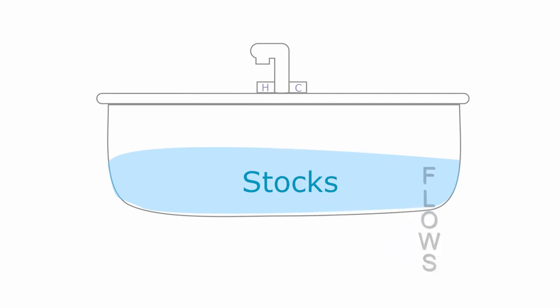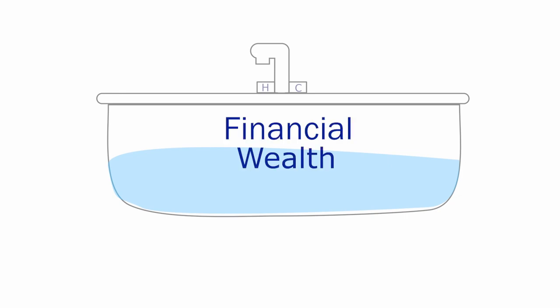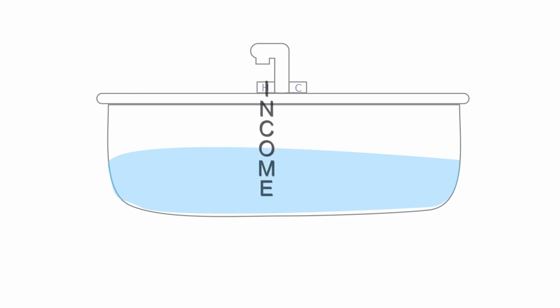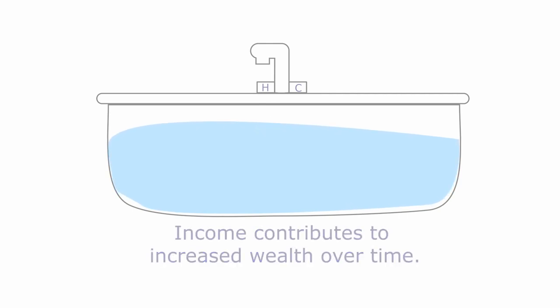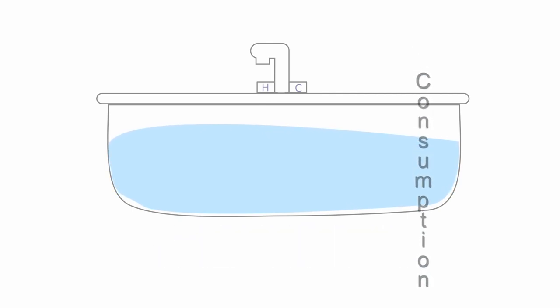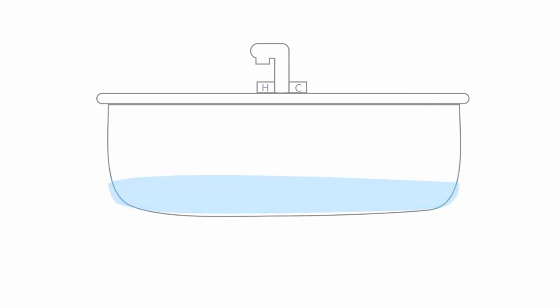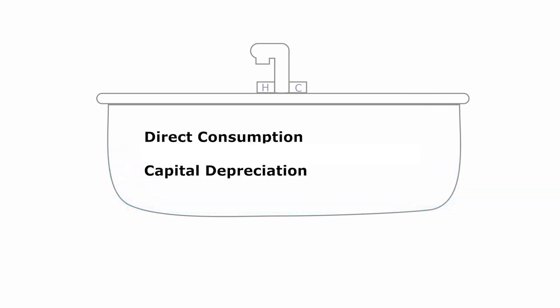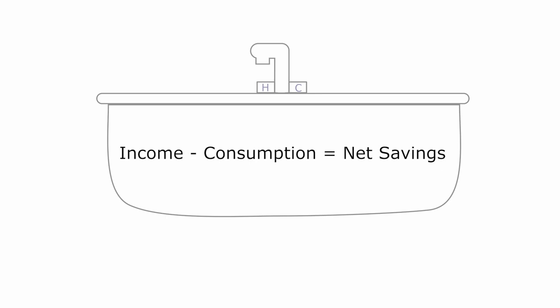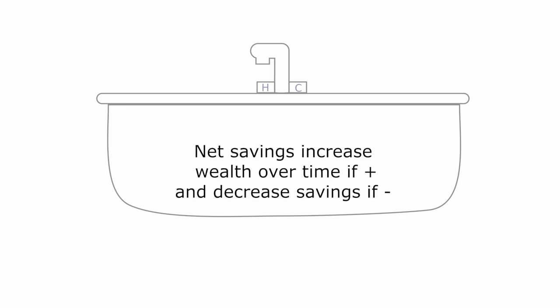Taking the bathtub example further: financial wealth is a stock and represents the quantity of water in the bathtub held by people or places at a certain point in time. Income is a flow of financial capital and represents the rising amount of water in the bathtub, contributing to increased financial wealth over time. Consumption is also a flow and corresponds to the drainage of water from the bathtub, which includes direct consumption or financial capital depreciation, since all forms of capital tend to depreciate over time. The difference between income and consumption represents net savings, which increases financial wealth over time if positive and depletes it if negative.